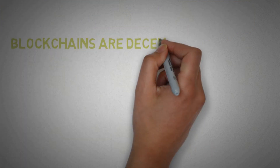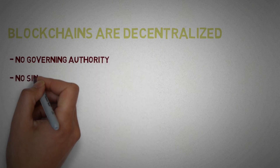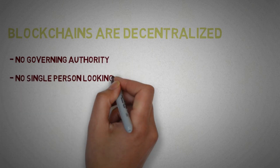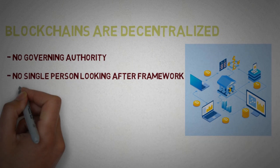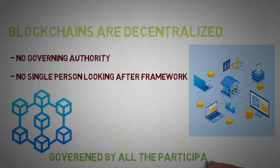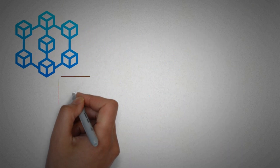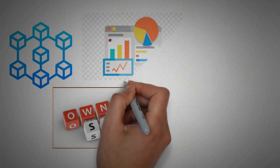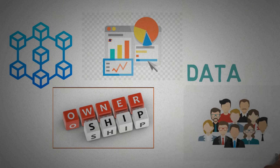Number four: blockchains are decentralized — that means there is no governing authority or single person looking after the framework. Blockchains are governed by all the participating nodes. Number five: blockchain provides proof of ownership of the data to the users.